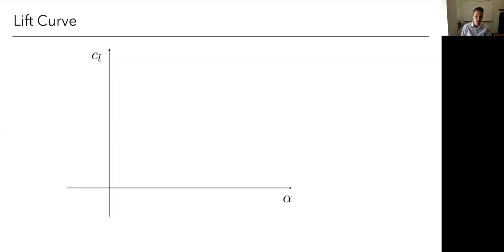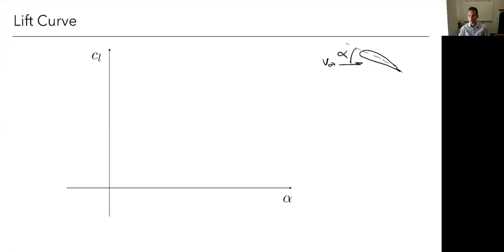Let's continue our discussion on airfoils and wings. I'd like to try a little exercise. Think about an airfoil as it changes angle of attack — starting from zero, negative, increasing upward. What will the lift coefficient look like? How will it change as we vary the angle of attack? Pause and take a minute to try that out — it'll help you remember and understand this better.